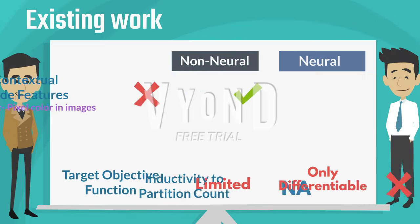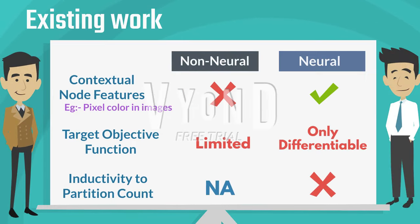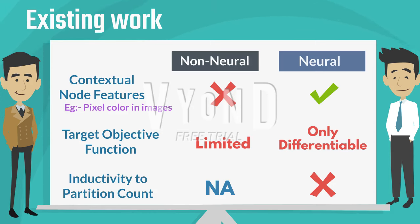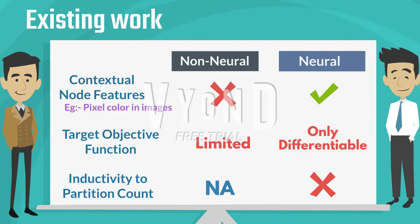Existing approaches to solve the graph partitioning problem have certain limitations. The non-neural approaches cannot take into account the contextual node features of the graph. Further, the existing neural approaches work only with differentiable partitioning objectives. Additionally, they are non-inductive to the number of partitions and require retraining for unseen partition numbers.